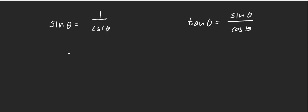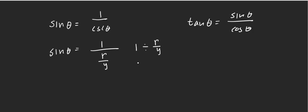I want to show you why sine theta equals 1 over cosecant theta. Cosecant theta is r over y, so 1 divided by r over y is the same as 1 times y over r, which is y over r. That's the definition of sine theta, which is y over r. That's why sine theta is 1 over cosecant theta.